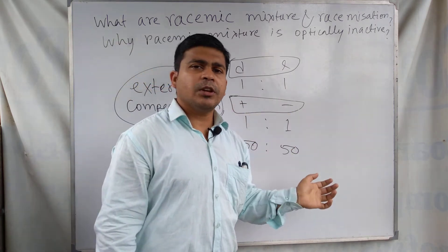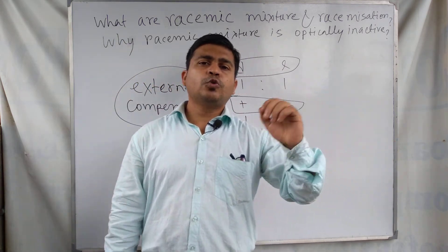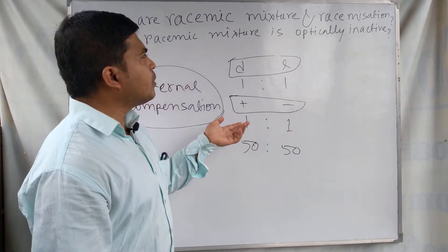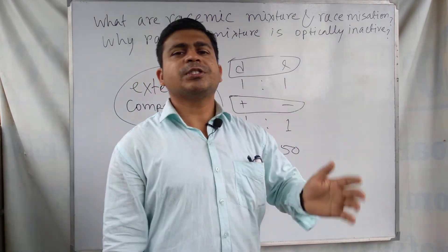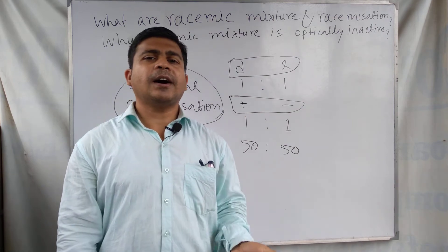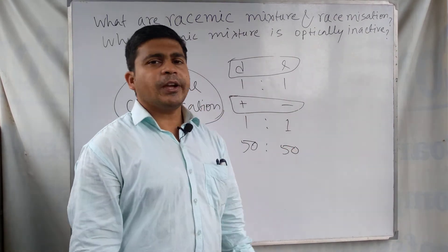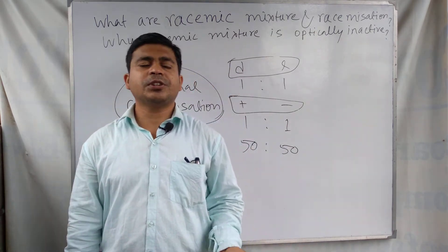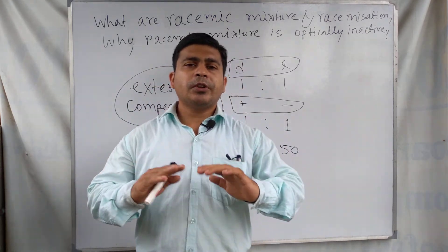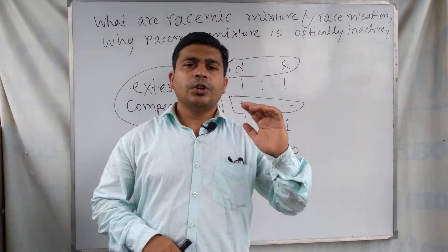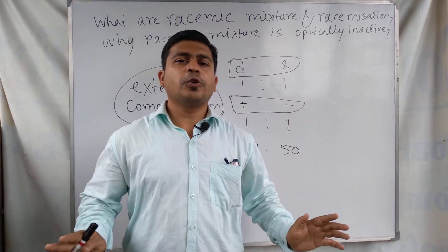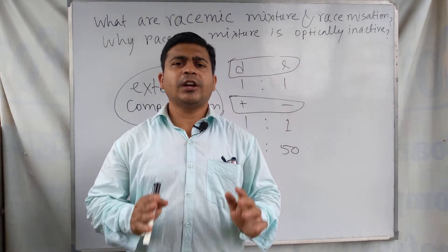To summarize: a racemic mixture is an equimolar mixture of two enantiomers, plus and minus, or a 50:50 mixture of D and L isomers. Racemization is the process of synthesizing the racemic mixture from one enantiomer. Racemic mixtures are optically inactive due to external compensation, where one enantiomer completely cancels the optical rotation of the other — equal in magnitude and opposite in direction — resulting in no net rotation.